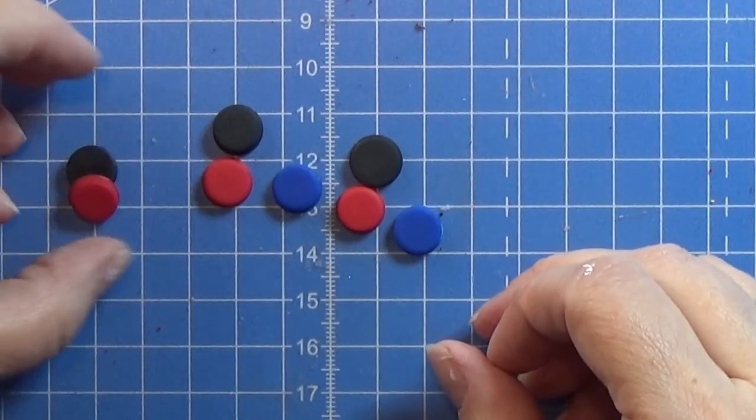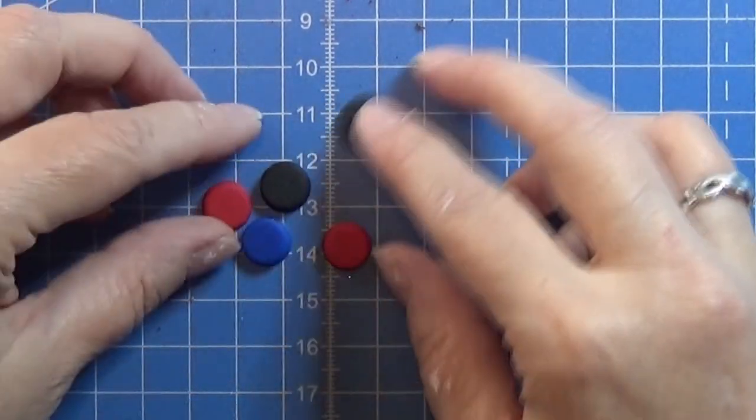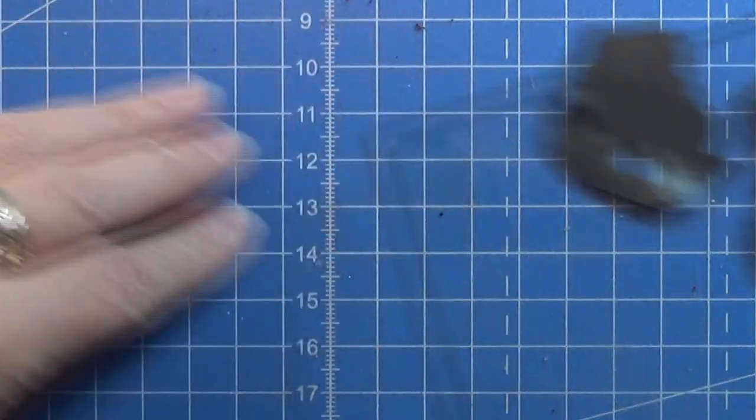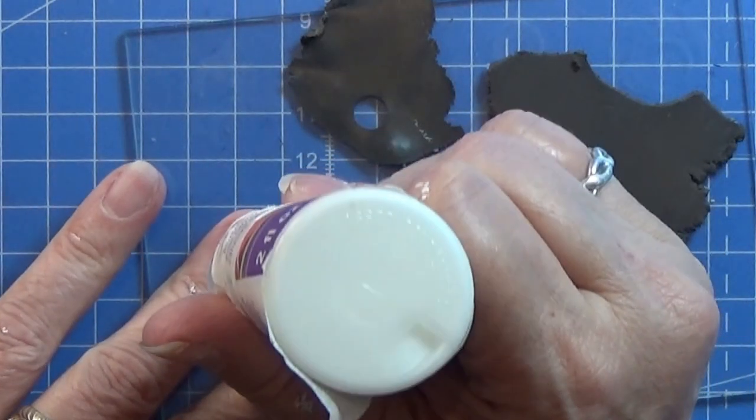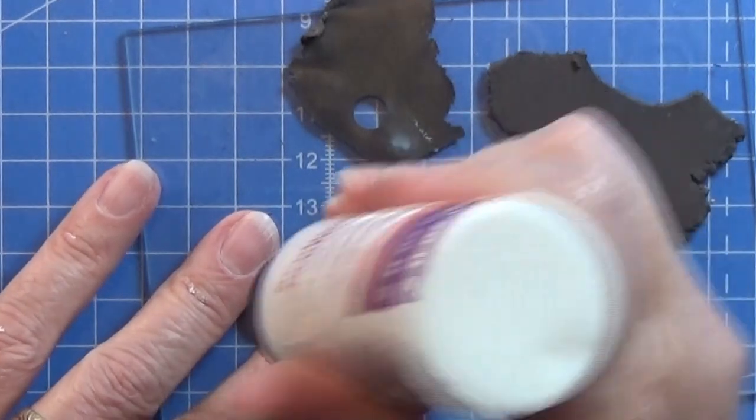Here are all my baked bottoms for this ashtray. Now we are going to make the top and for that I rolled out some black clay in a setting three.